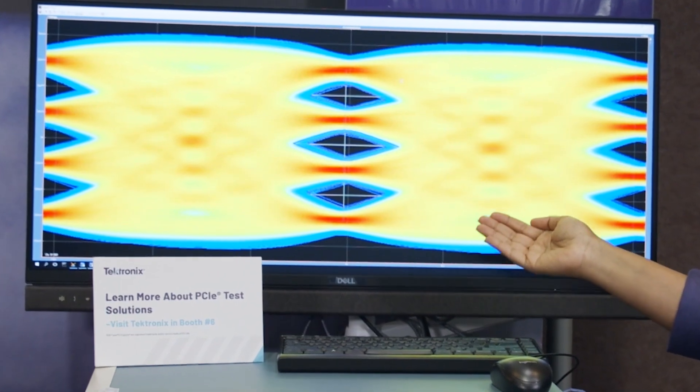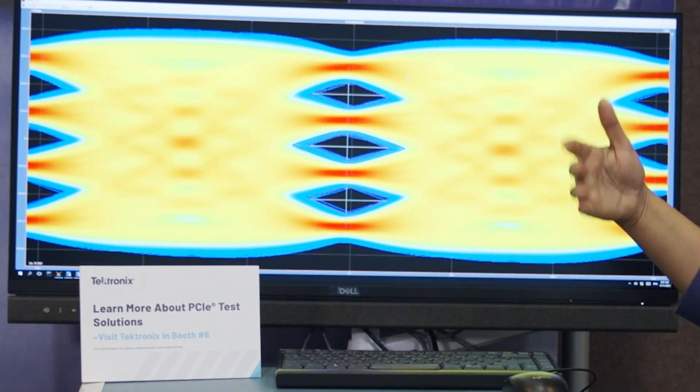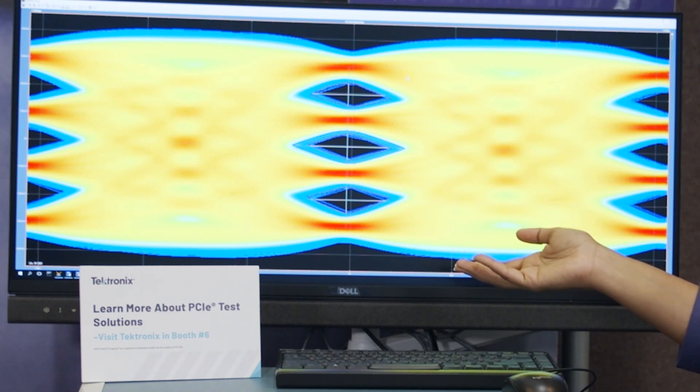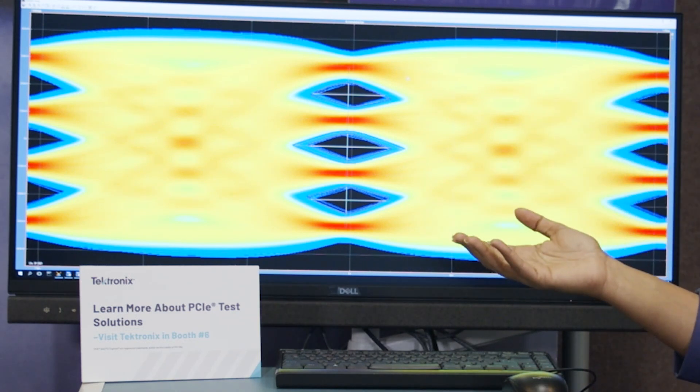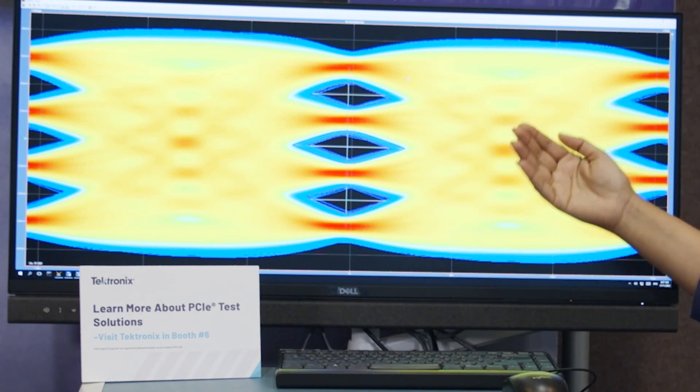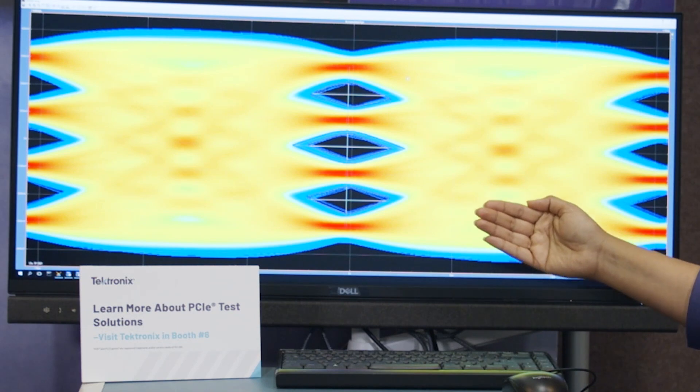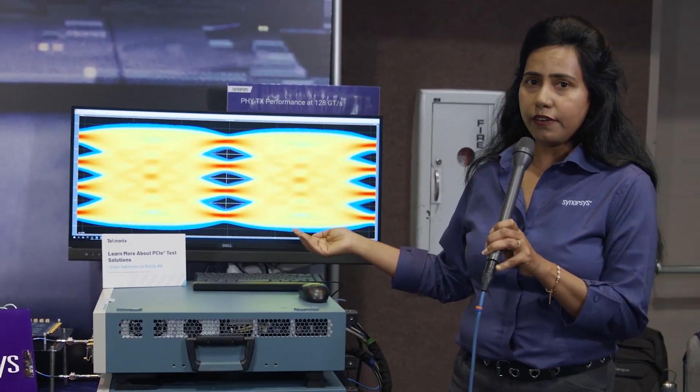As you can see it's wide open, has very good linearity among the three eyes. We all know about PCIe Gen 7 which is only at 0.3 spec, it will be in PAM4 modulation techniques. This PAM4 eye at 128 gigabits per second is showcasing very good linearity, very low jitter, and good RLM.